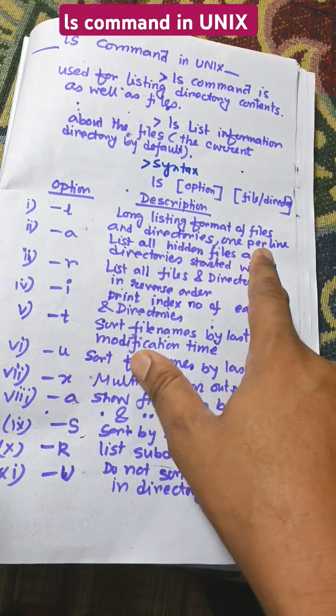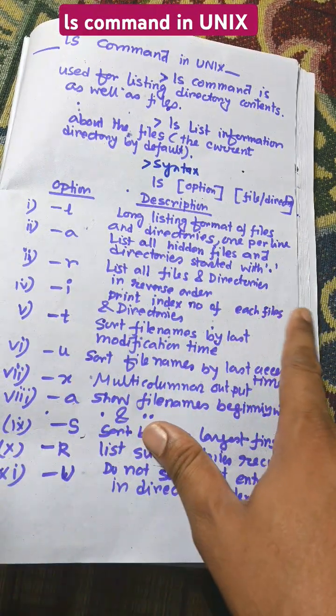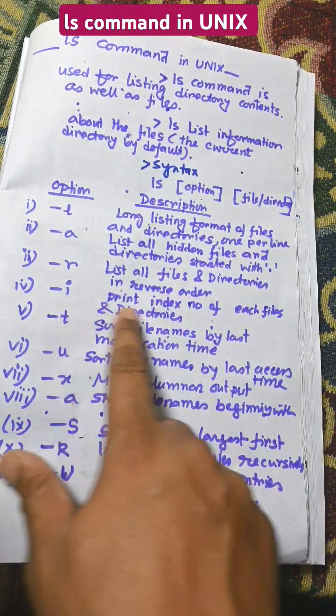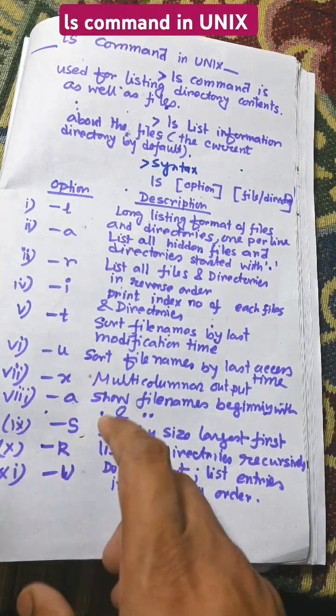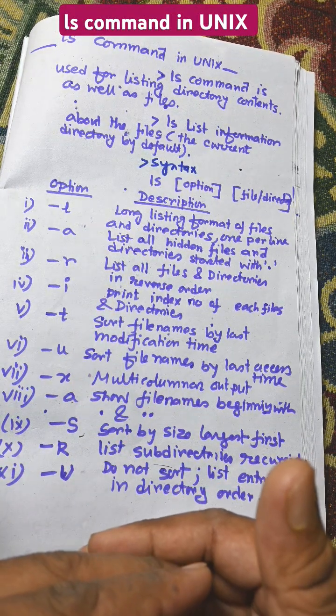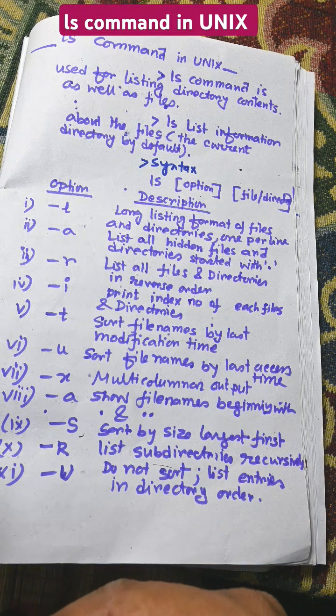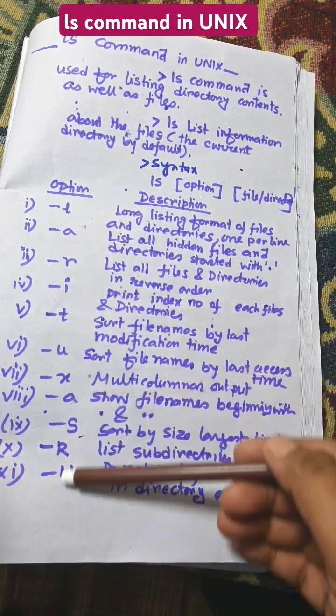ls hyphen l means long listing files, ls hyphen r means reverse order. You can also use combinations like ls hyphen alut. We can use combination of more than one option in Unix command. So ls is a very powerful command. We need to remember all these options.